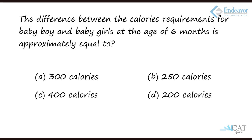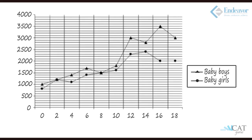The next question: what is the difference between calorie requirements for baby boys and baby girls at the age of six months? Looking closely at the graph, between 0 and 500 there are four lines, so the first line corresponds to 100, second to 200, third to 300, fourth to 400. The same pattern replicates for the entire vertical axis, so from 1000 to 1500 we have 1100, 1200, 1300, 1400.